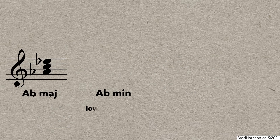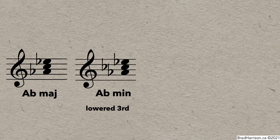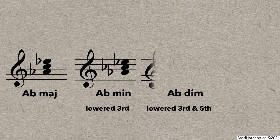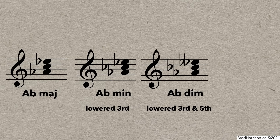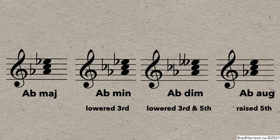If we want to make it minor, we lower the third from C to C flat. Diminished means the fifth, E, actually lowers to E double flat. And an A flat augmented triad would start with the major triad, but raise the fifth, E flat, by a semitone to E natural. And those are the four options for triads built on A flat.